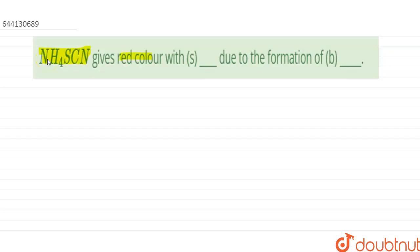thiocyanate gives red color with [blank] due to formation of [blank]. So we have to fill these blanks. With what does ammonium thiocyanate react to give red color? Basically, ferric alum gives red